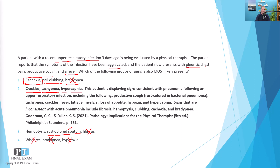To list a somewhat complete set of signs and symptoms related to pneumonia: productive cough — often rust-colored in bacterial pneumonia, or more of a clear, serum-based color in viral pneumonia — tachypnea, crackles, fever, fatigue, myalgia or muscle pain, loss of appetite, hypoxia (too little oxygen), and hypercapnia (too much carbon dioxide).